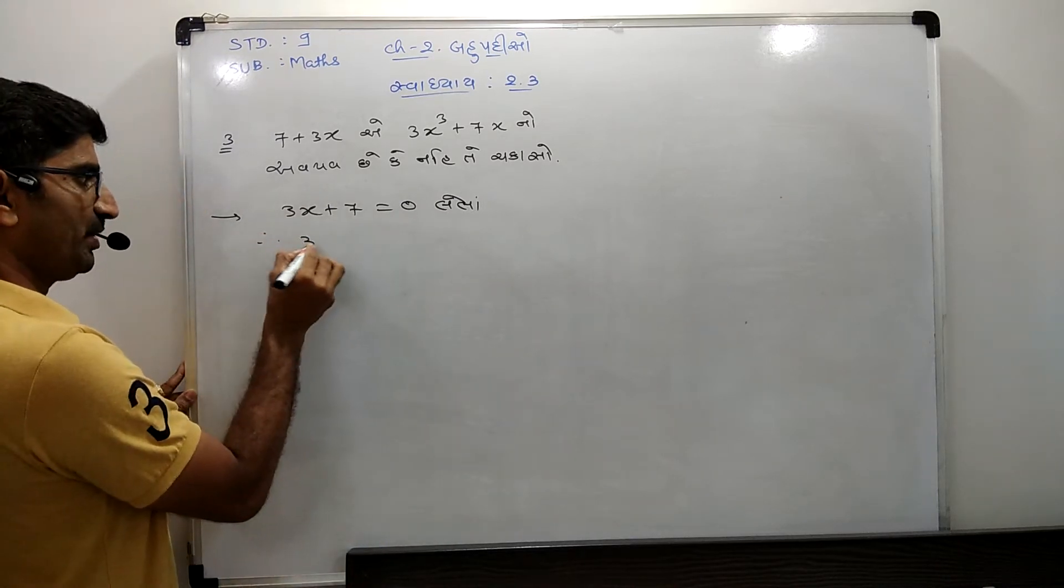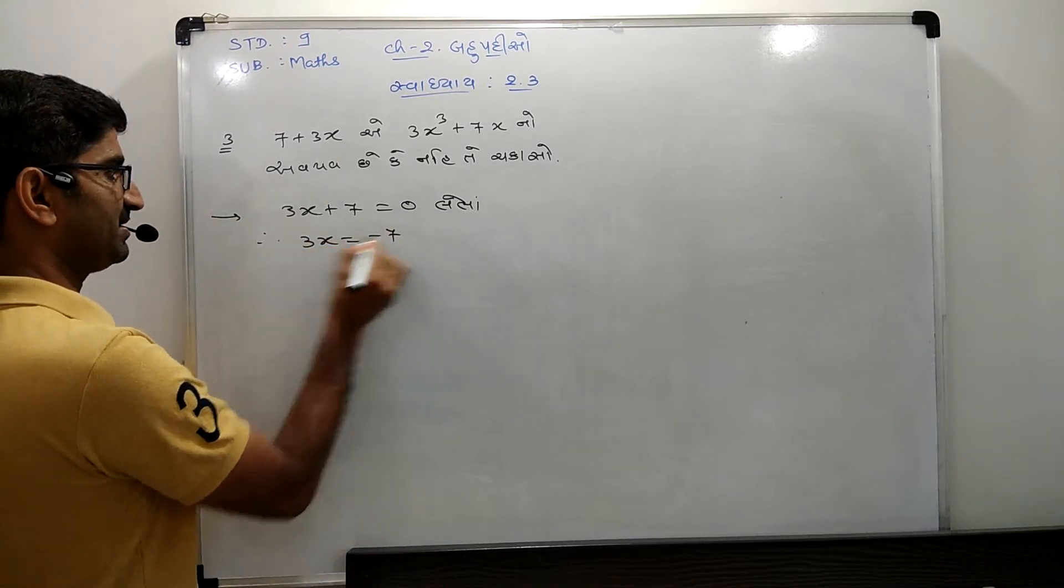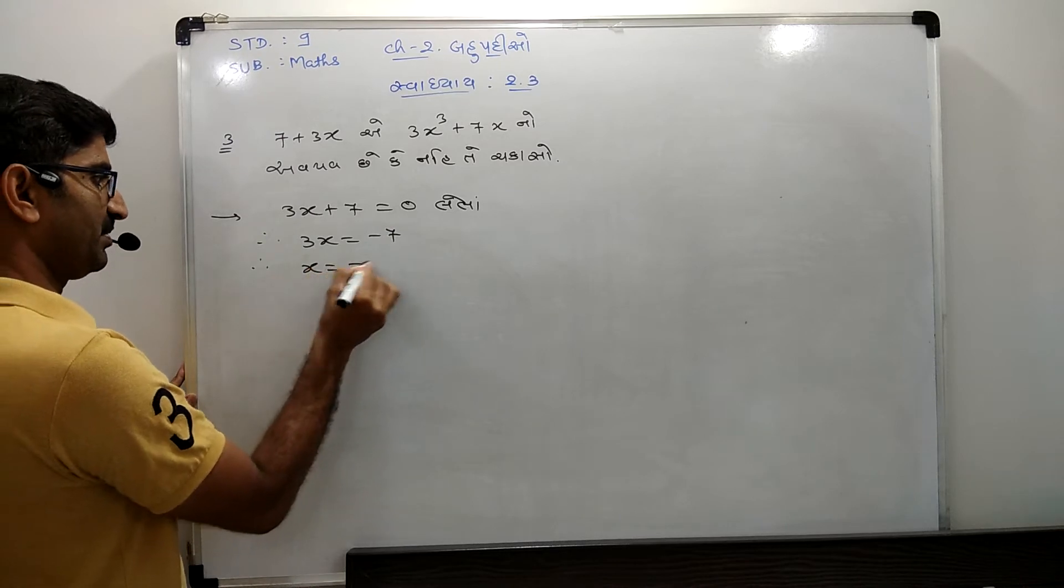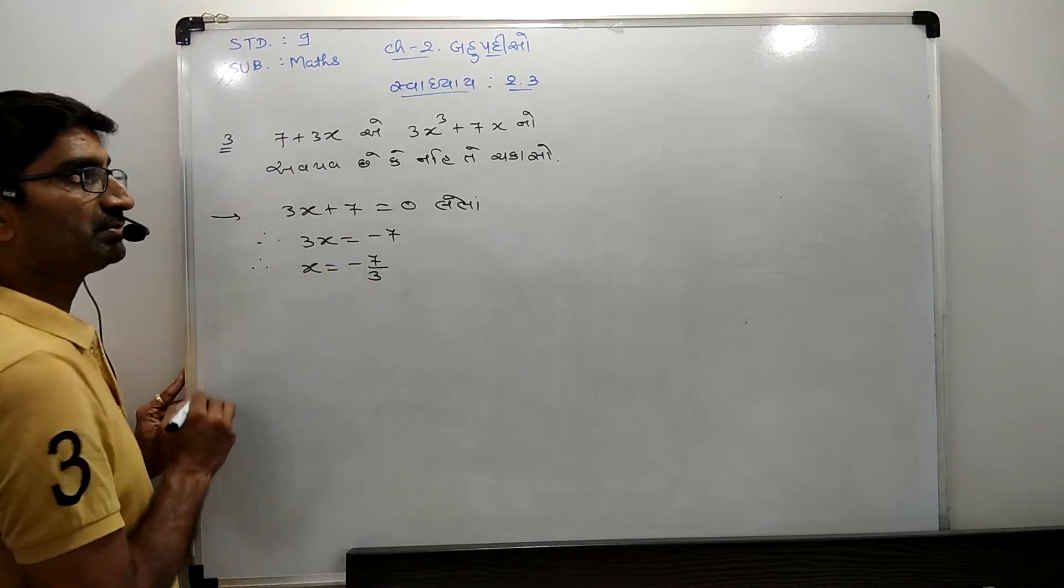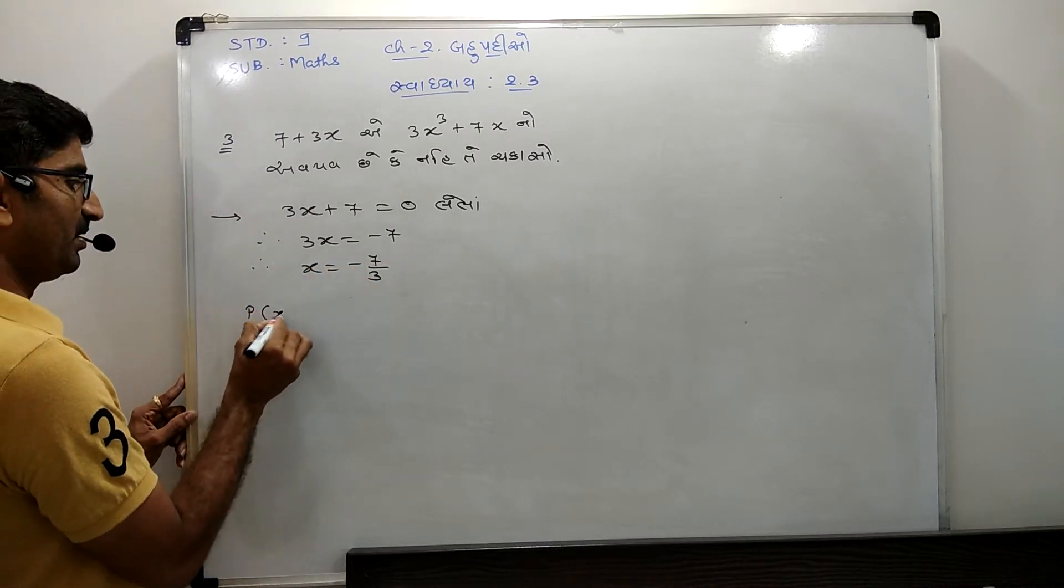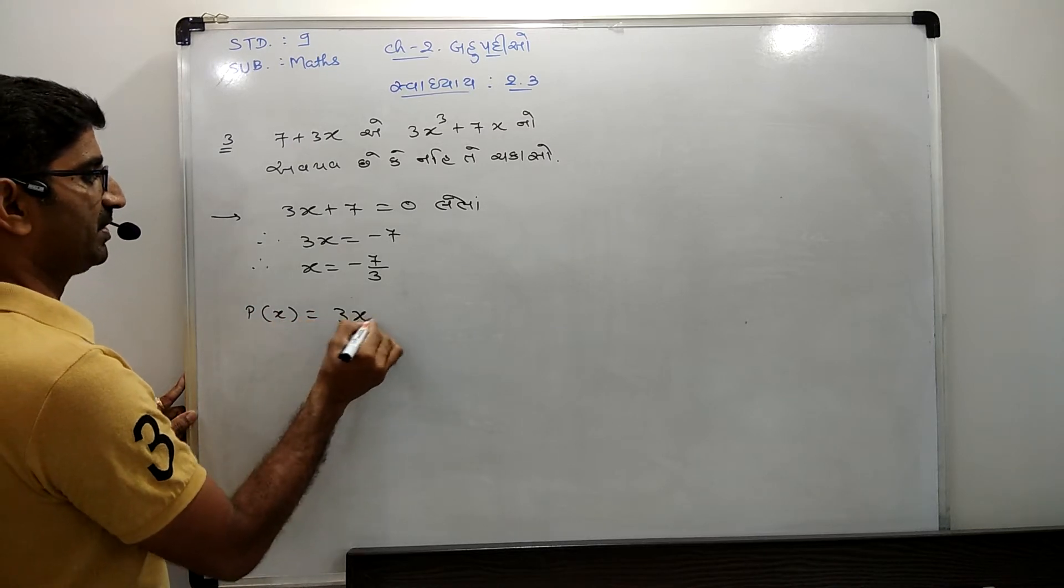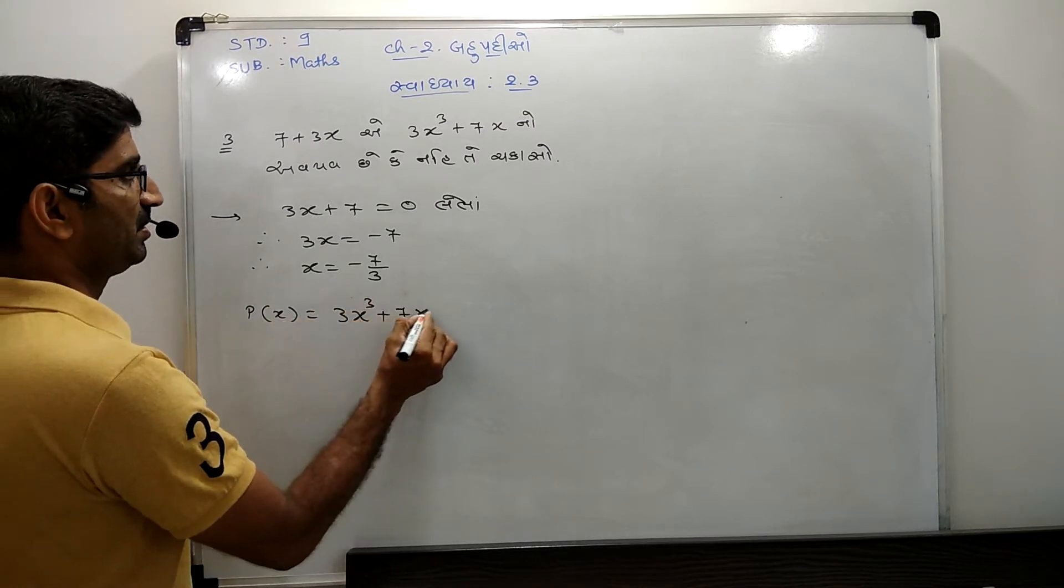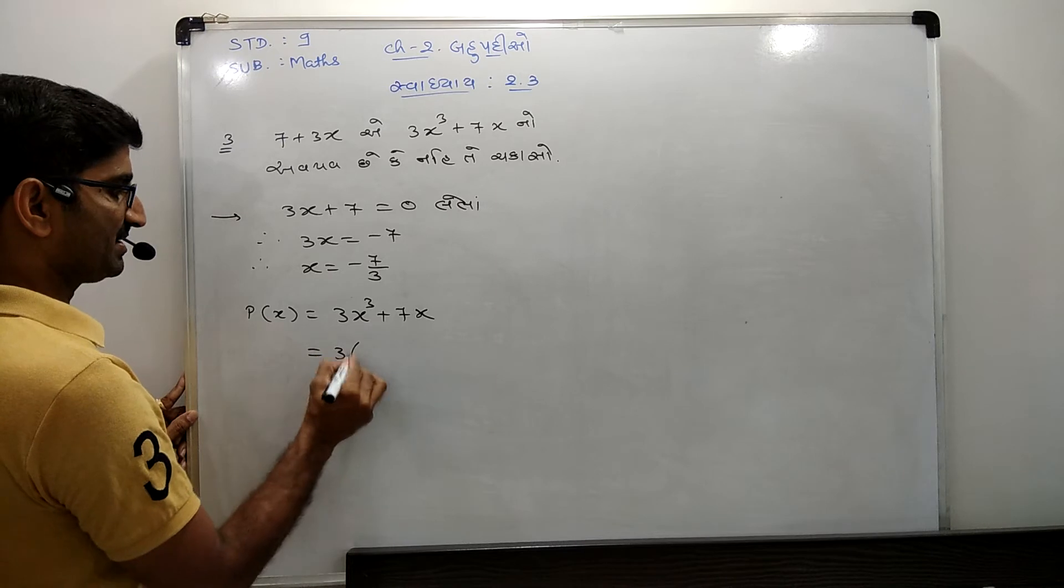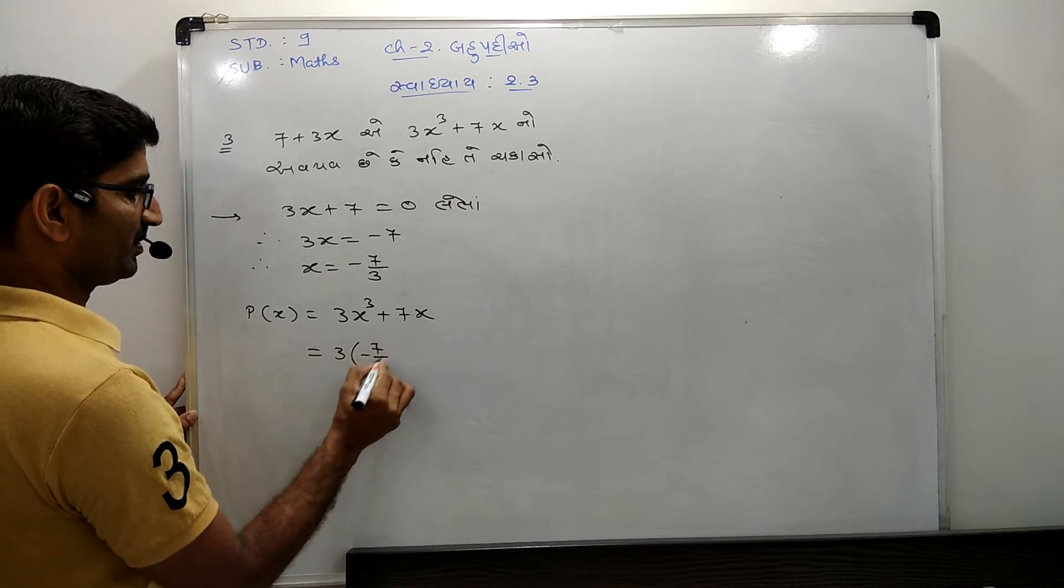Now 3x plus 7 is equal to 0. So, 3x minus 7, which gives us x minus 7 upon 3. Therefore, 3x plus 7x minus 7 upon 3.